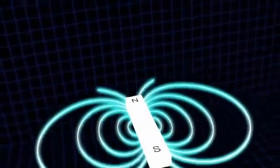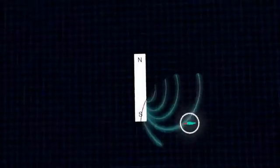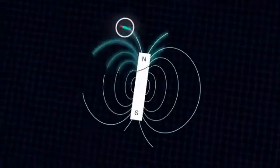If you take the filings away, you can still get an idea of what the field looks like by flying a tiny compass around the magnet. The compass points in the direction of the magnetic field, allowing you to draw its shape.